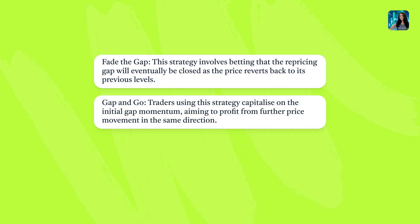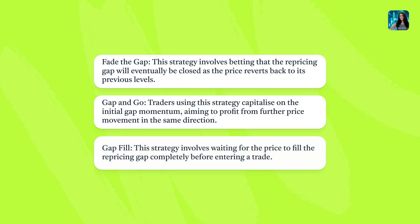Gap and go: traders using this strategy capitalize on the initial gap momentum, aiming to profit from further price movement in the same direction. Gap fill: this strategy involves waiting for the price to fill the repricing gap completely before entering a trade.